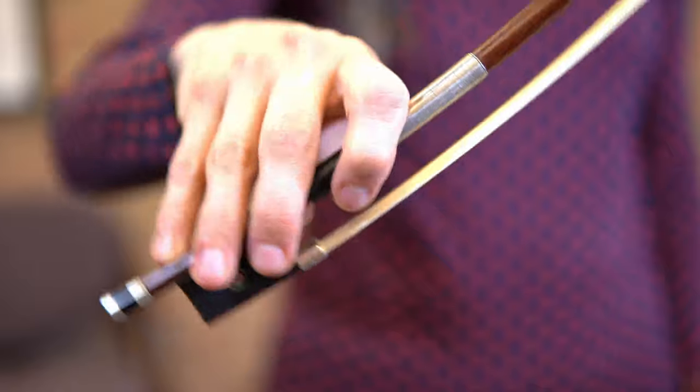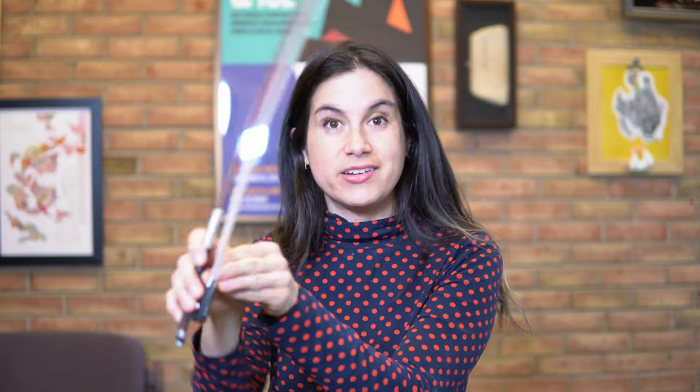You want to be sure that the bow is pivoting around the thumb and not that the thumb is following the bow and stuck to it.